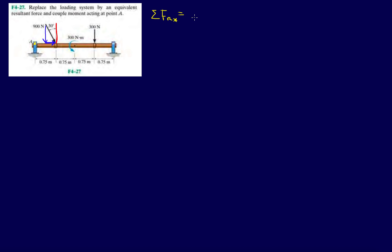It's pointing to the right, so it's positive: 900 times sine 30 degrees. That's the only force in the X direction. 900 times sine 30 is 450 Newtons.